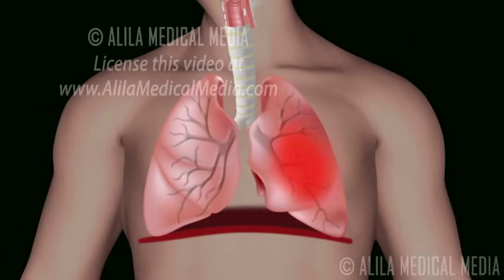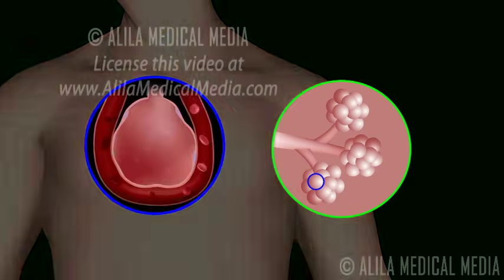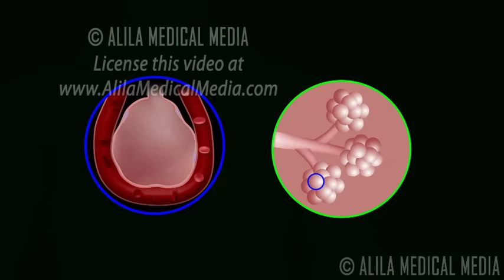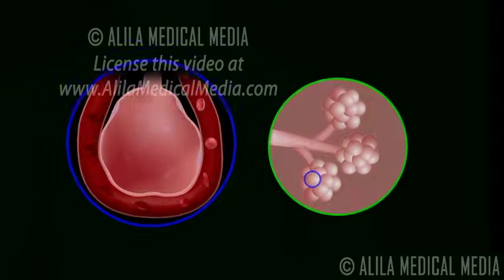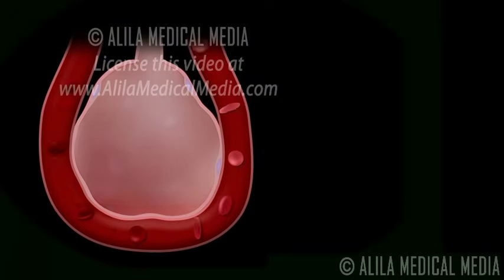Pneumonia is a common infection of the lungs, affecting mostly the microscopic air sacs, the alveoli. The function of the respiratory system is to exchange oxygen and carbon dioxide between the body and the environment. This process takes place in the alveoli of the lungs.